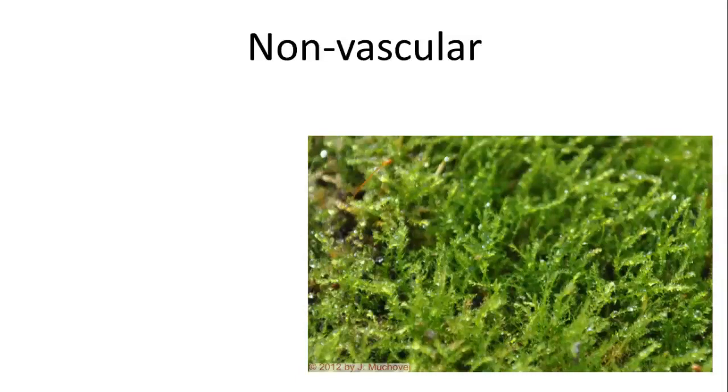We're going to start out with the nonvascular plants. These are plants that live in moist environments, and we normally see them as moss. And that is what moss looks like. It is the gametophyte. It is actually haploid in nature.